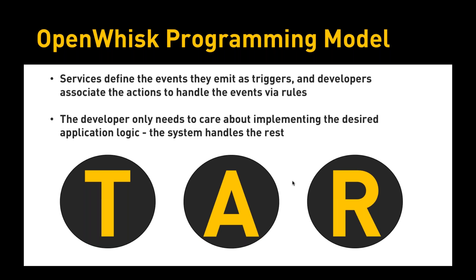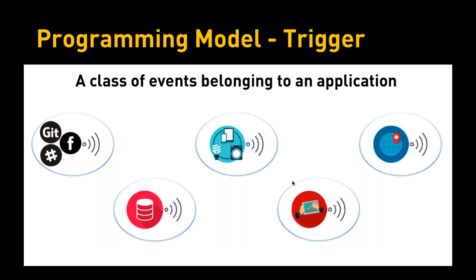Let's start with a trigger. Simply put, a trigger is nothing but a class of events belonging to an application. For example, a webhook coming from a Facebook bot, a GitHub commit, or a Slack notification could be a trigger. A change in database state could be a trigger. IoT devices sending data could be a trigger. Sometimes an interactive GUI operation can also result in a trigger, and geolocation could be another trigger. Basically anything which is more like an event, raised based on a specific condition, can become an input — and that is what is called a trigger. It is a very loosely coupled architecture. The trigger is the bridge between an external event source like GitHub and OpenWhisk.